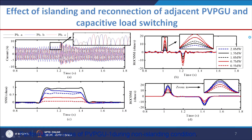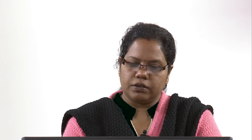For the capacitor switching and adjacent PV reconnection non-islanding event, the rate of change of superimposed negative sequence impedance remains within 20 — which means it is correctly not declared as an islanding situation. Testing for different types of capacitor switching confirmed that the value stays below the threshold of 20.